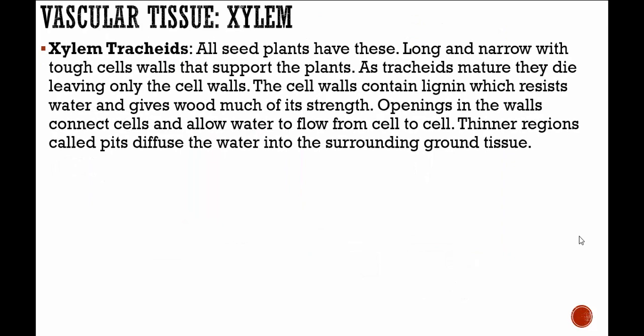Xylem tracheids are found in all seed plants. They are long and narrow with tough cell walls that support the plant. As tracheids mature, they die, leaving only the cell walls. The cell walls contain lignin, which resists water and gives wood much of its strength. Openings in the walls connect cells and allow water to flow from cell to cell. In regions called pits, water diffuses into the surrounding ground tissue.